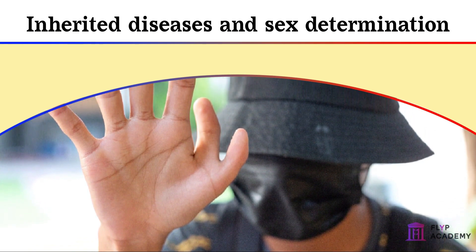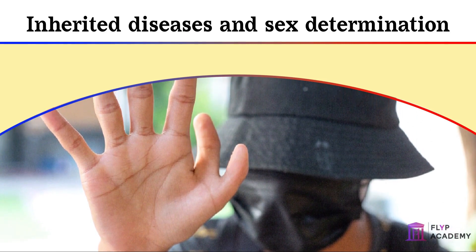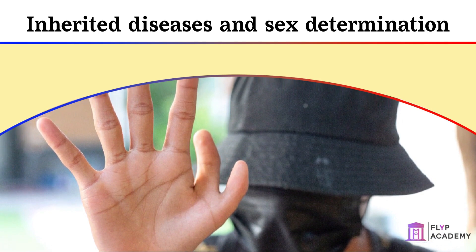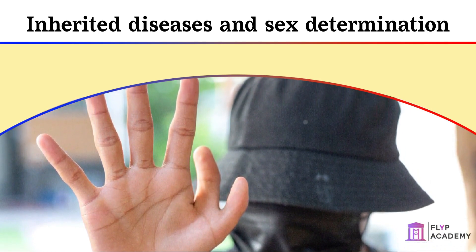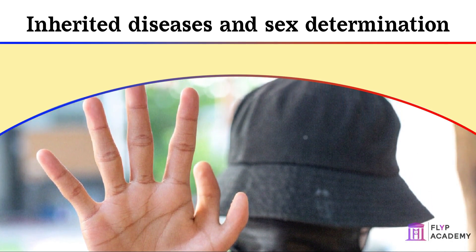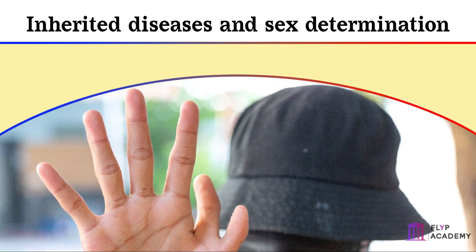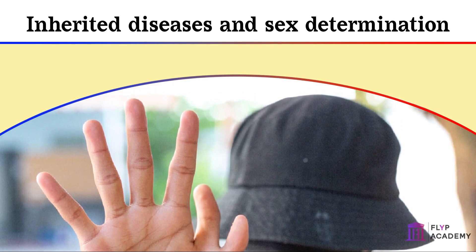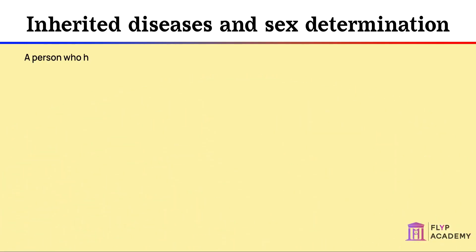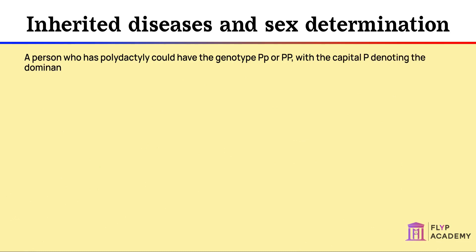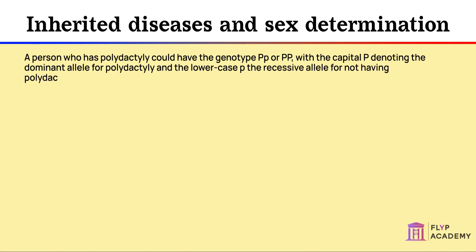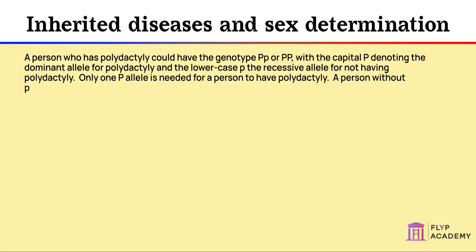First, we will look at an inherited disorder called polydactyly. This disorder can vary in severity and leads to extra digits, ranging from small growths on the hands and feet to whole extra fingers and toes. Polydactyly is caused by a dominant allele, meaning only one allele needs to be inherited for the individual to have the disorder. A person with polydactyly could have the genotype Pp or PP, with capital P denoting the dominant allele and lowercase p the recessive allele. A person without polydactyly would have the genotype pp.